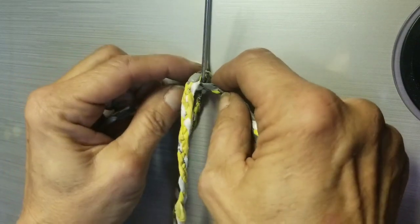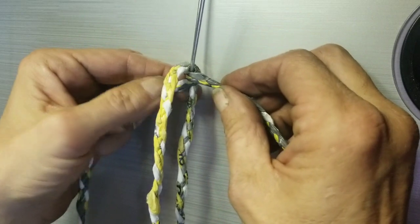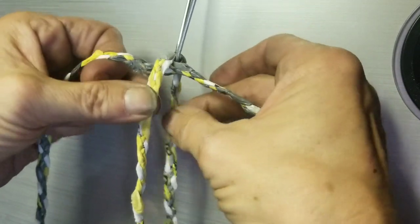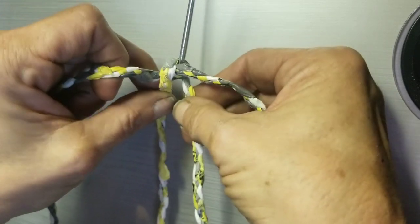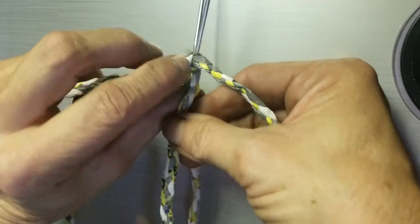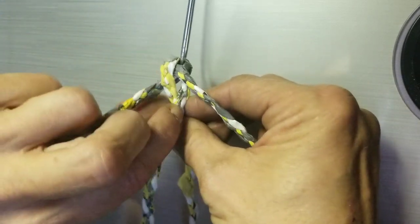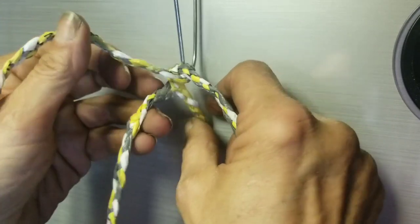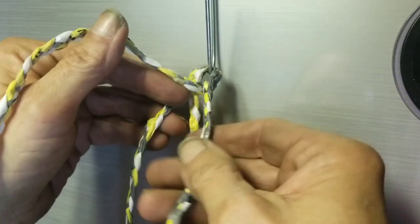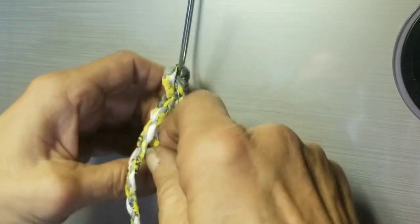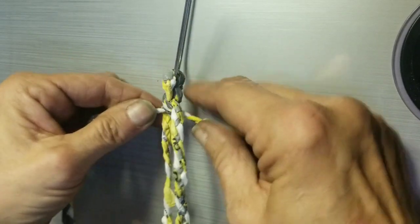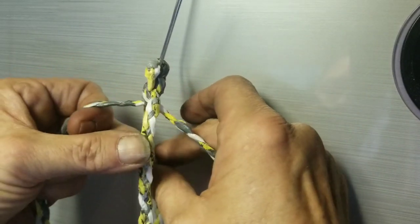Then you pull it tight. You take these, which is your other piece, and cross it over in between. Then you take the original piece you had and cross it over in between again.